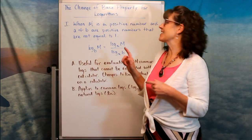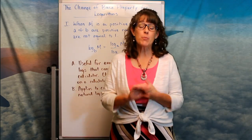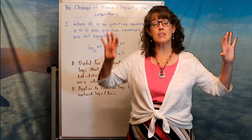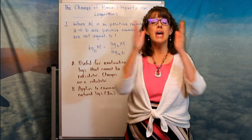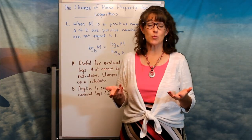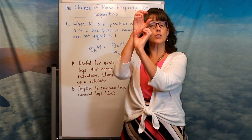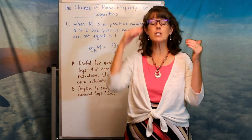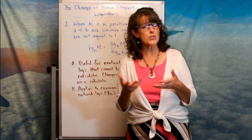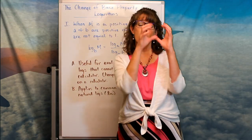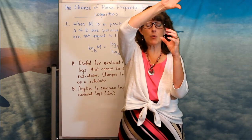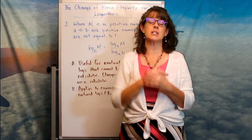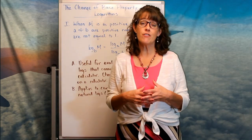We're going to fly ourselves into the change of base property for logarithms. We have our product rule for logarithms — we can expand logarithms that have a product within the log by taking the log of each individual factor and adding them together. We have our quotient rule — if we have a quotient within the log, we take the log of the numerator minus the log of the denominator. We also have our power rule — if our log has an exponent, we can slip that exponent down in front as a coefficient, or vice versa. All of these allow us to simplify and evaluate our logarithms.